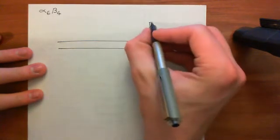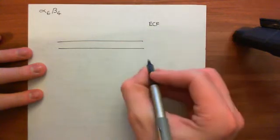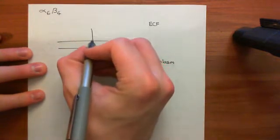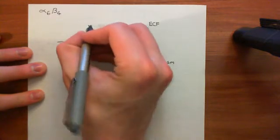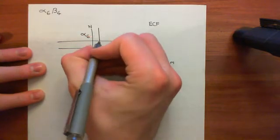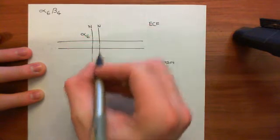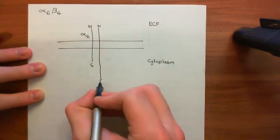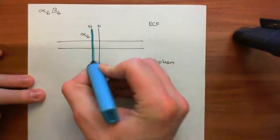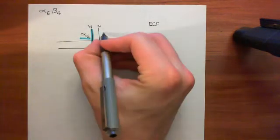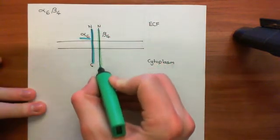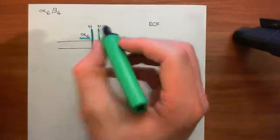Let's draw this. Here is the cell membrane — this is the extracellular fluid, the ECF, and this is the cytoplasm inside the cell. We'll have the alpha-6 integrin here, with its amino terminus and carboxylic acid terminus. Bound to it we'll have our beta-4 integrin, with its N-terminus; beta-4 will have a longer C-terminal tail than alpha-6. So there we have our alpha-6 beta-4 heterodimer.